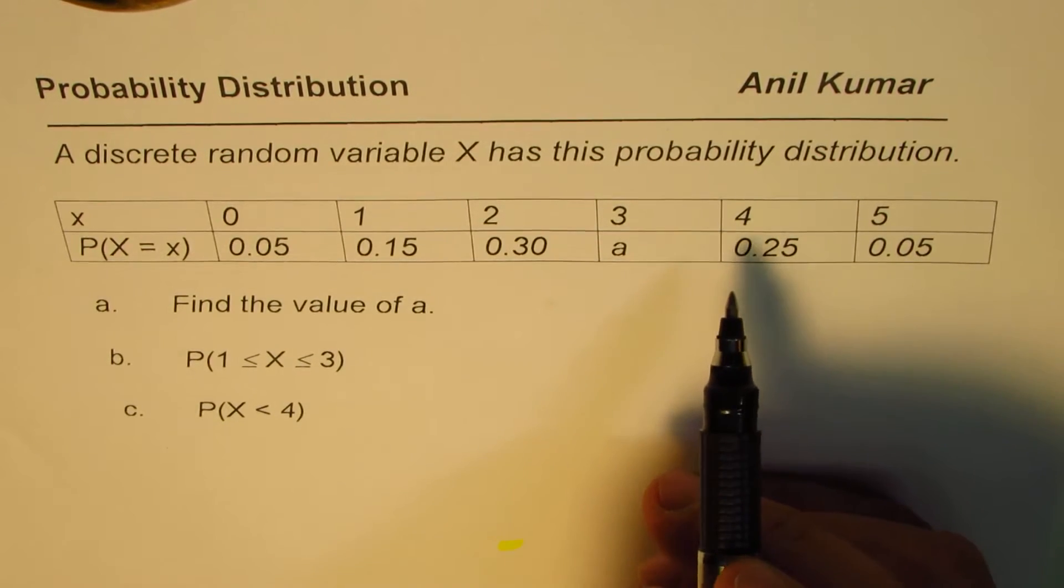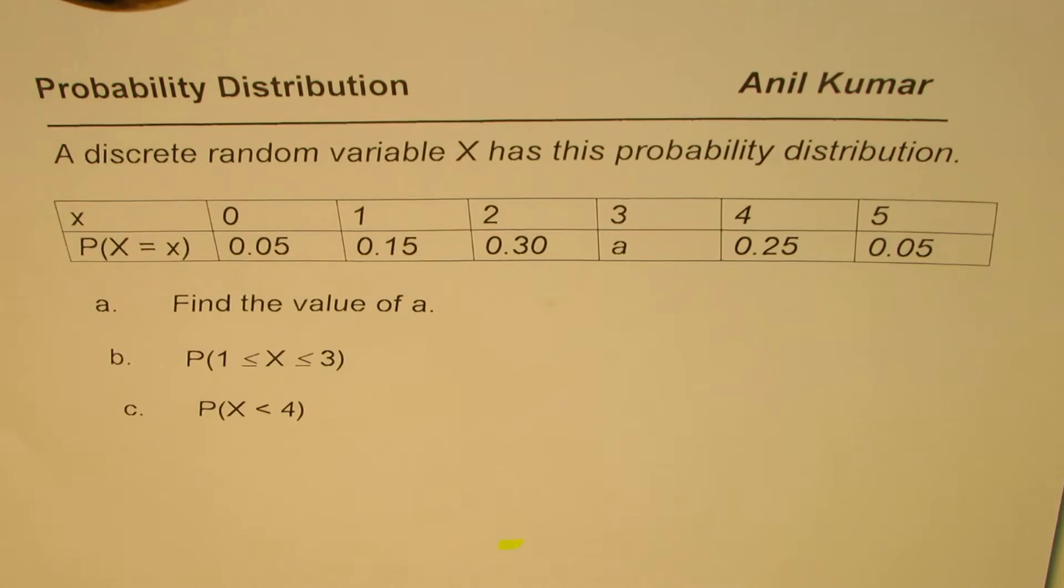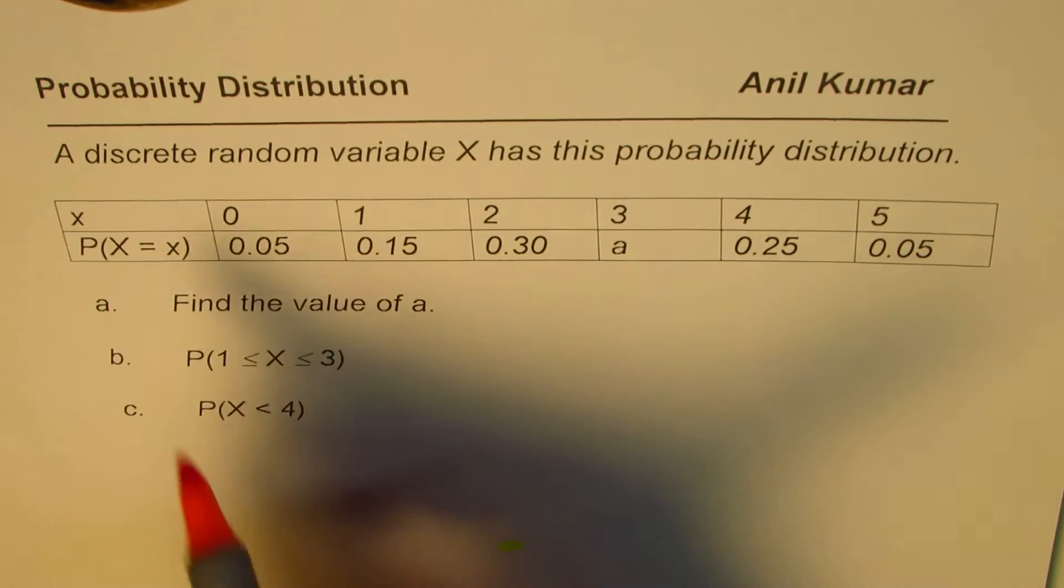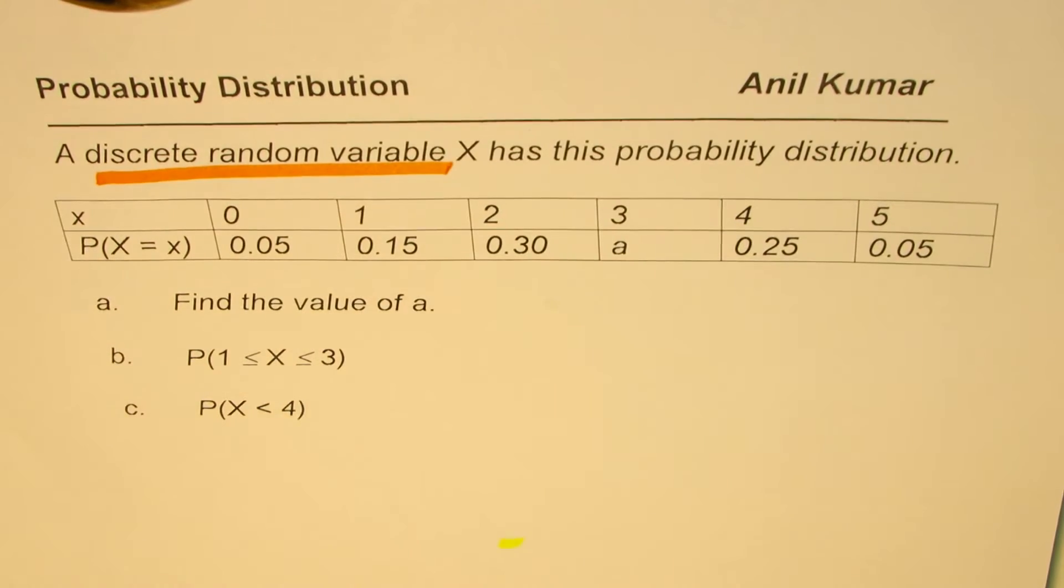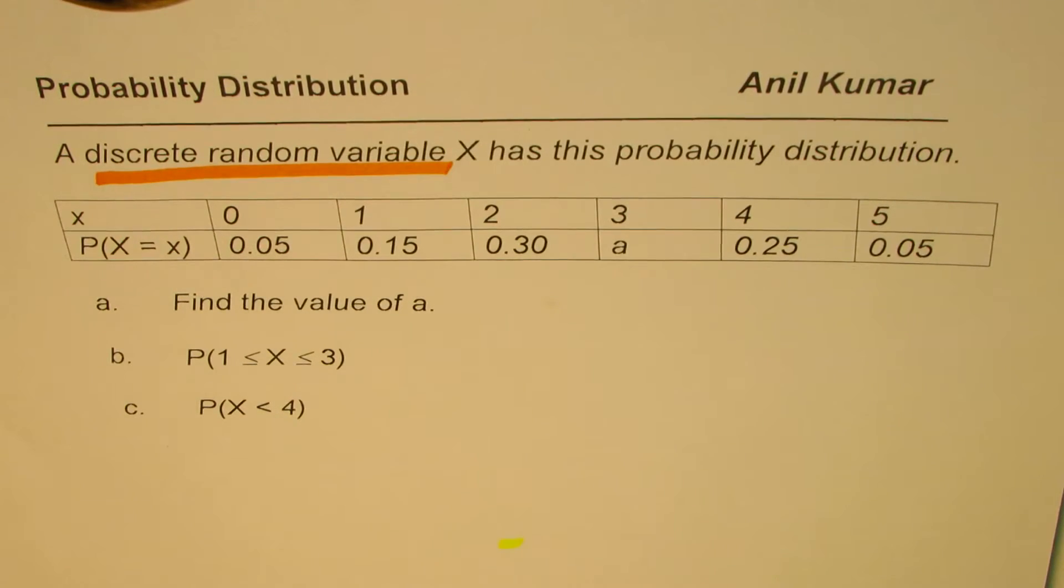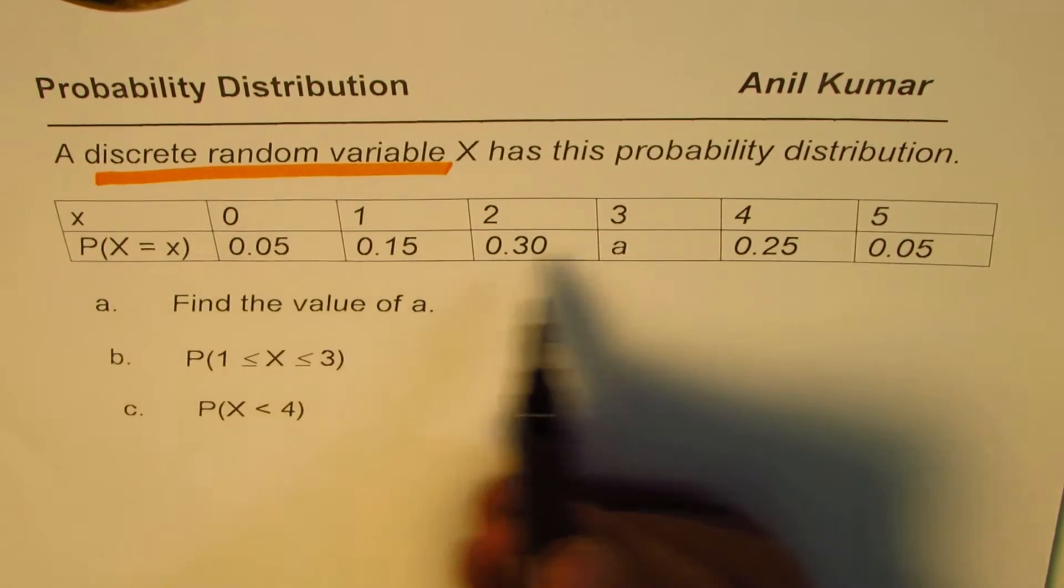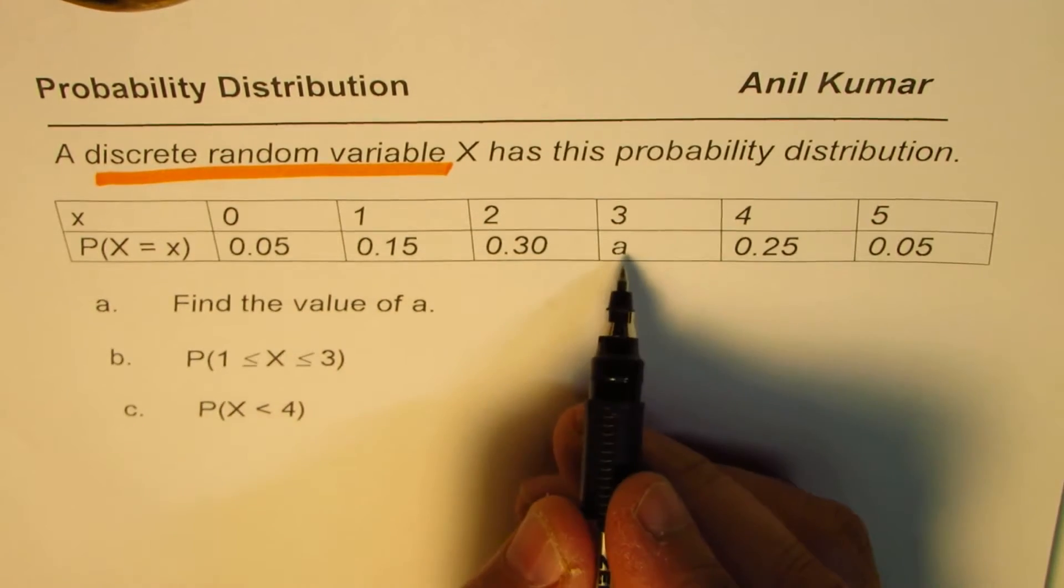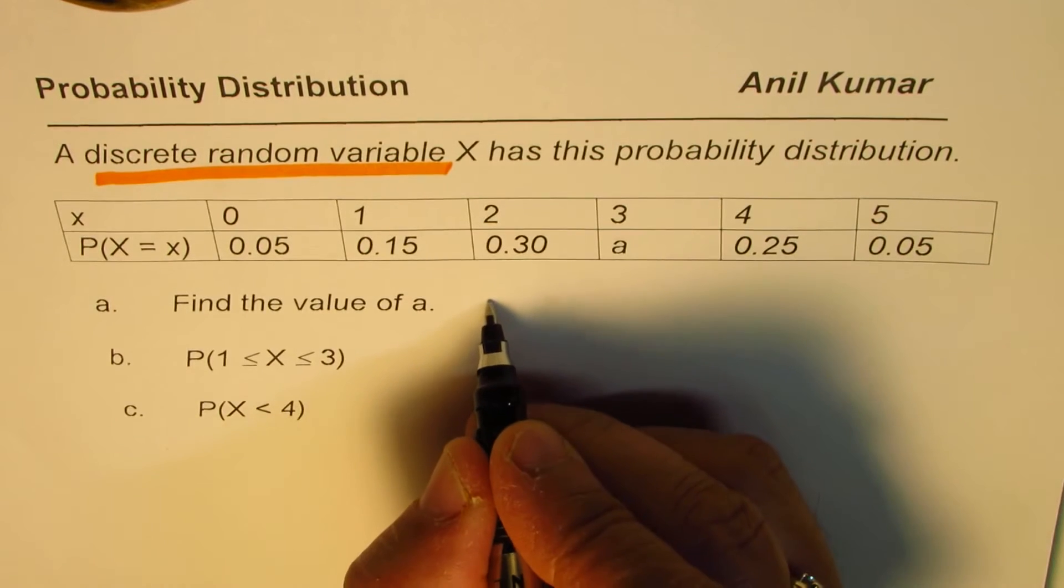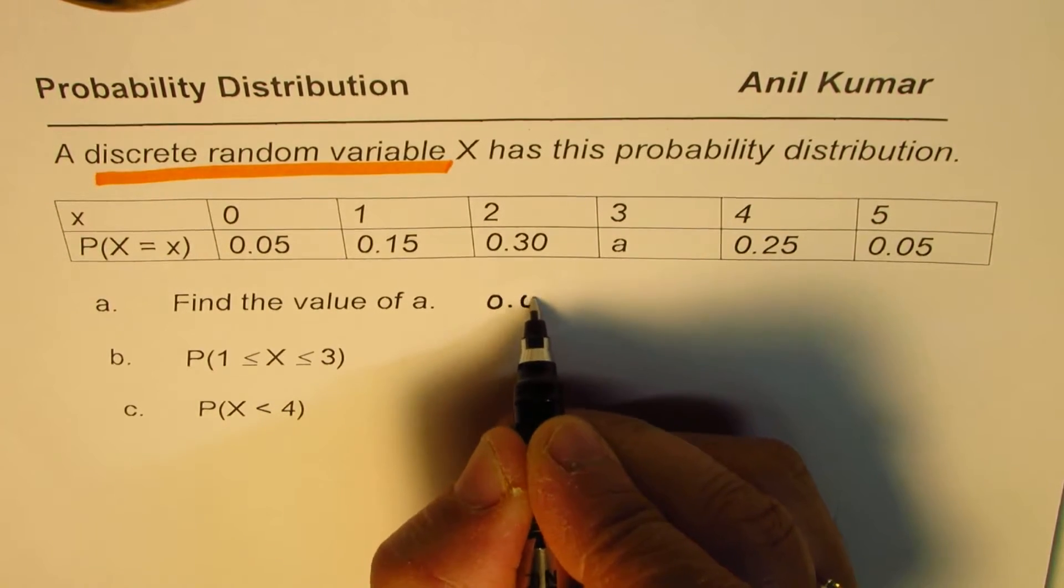Now since we are given that this is a discrete random variable, it really means that the sum of probabilities should be 1. So that means this sum should be 1 and that should give us a value of A. So we can find the value of A by adding them up.